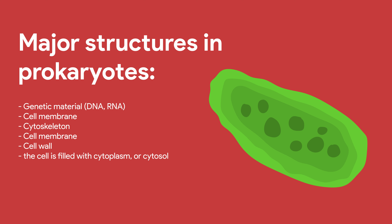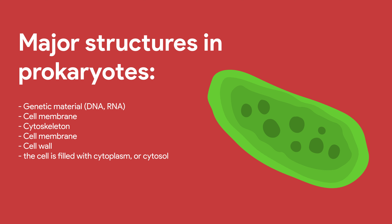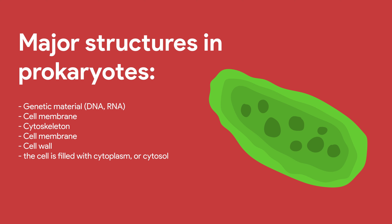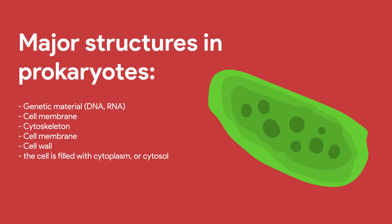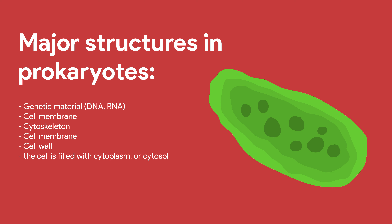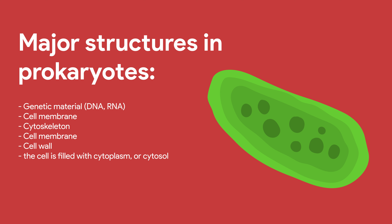Prokaryotic cells, or prokaryotes, are the earliest type of living cell. They are simpler than eukaryotic cells. Many simple life forms are a single prokaryotic cell. Bacteria are prokaryotes. Prokaryotes do not have a nucleus. Their genetic material is located in an area called the nucleoid, but it is not sealed into that spot by a membrane or any other structure.